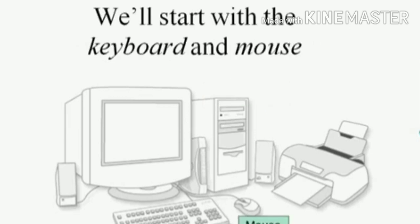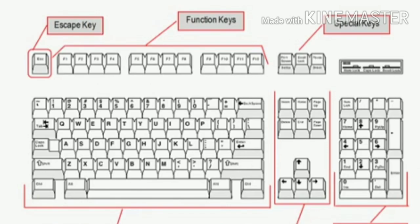We'll start with the keyboard and the mouse. Let's take a look at the keyboard. The main part of the keyboard is laid out pretty much as typewriters have been for well over 100 years, with the QWERTY — Q-W-E-R-T-Y — style of keyboard layout, the standard typewriter layout. That's the bulk of those keys. But there are a lot of other keys here, and so that's what we're going to talk about right now.